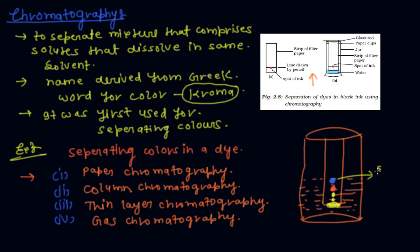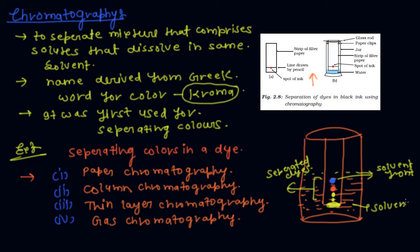This line edge is called the solvent front. These three are separated dyes, and this is the solvent. The last one is also a dye — this is the main dye. So this process is used in chromatography to separate colours in a dye.